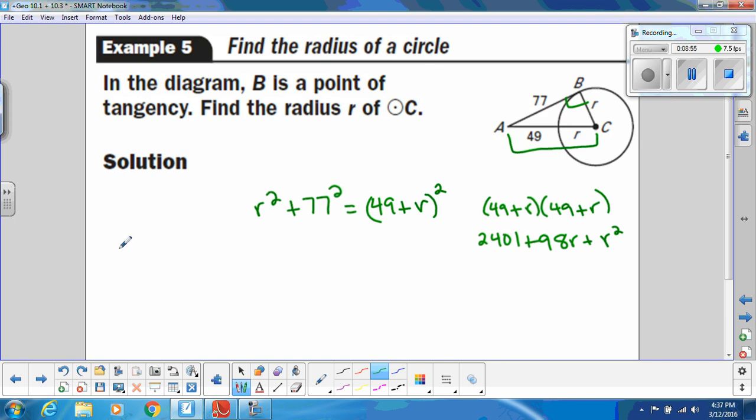So, r squared, I still have as r squared. 77 squared is 5929. And then that's equal to 2401 plus 98r plus r squared. Now, you might be thinking, oh no, I have r squared, I have to do quadratic. But, do you notice how you have r squared on both sides? So, you can subtract the r squared from both sides, and they cancel. And so, really all we're doing is a simple linear equation. So, that's kind of nice. So, we've got 5929 minus 2401. And that gives us 3528. And then we're going to divide by the 98. And that gives us 36. So, the radius of this circle is 36. And the reason we knew that is because we knew this was that point of tangency.